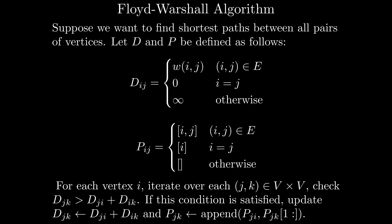Next, iterating over each vertex i, iterate over each pair of vertices j, k, and check if djk is greater than dji plus dik. If this condition is satisfied, update djk to be dji plus dik, and then set pjk to be the concatenation of pji and pik, excluding the extra i. When this algorithm terminates, pij will contain the shortest path for pair i,j, and dij will contain the corresponding minimum distance. This routine is known as the Floyd-Warshall algorithm, and is particularly powerful for solving the all-pairs shortest paths problem when our graph has a lot of edges, in other words, when it's dense.